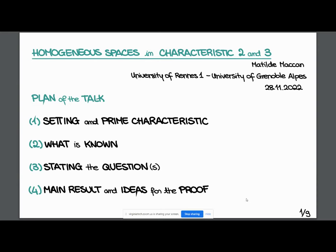I work with Mathieu Romany in Rennes and Michel Brion in Grenoble. In this 20 minutes, we're going to talk about homogeneous spaces in characteristic two and three. We'll focus on notation, what happens in prime characteristic, then what is known, the questions we asked, and I'll give one result and, if time permits, a couple of ideas on how to prove it.